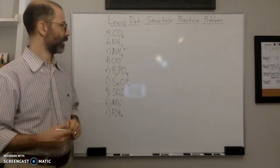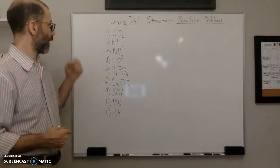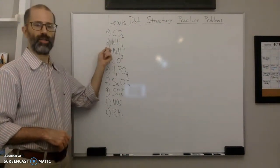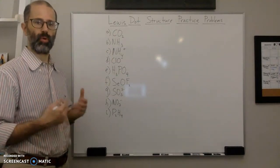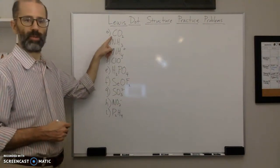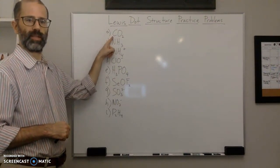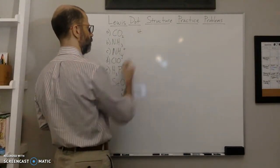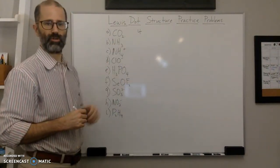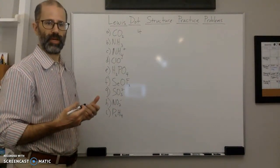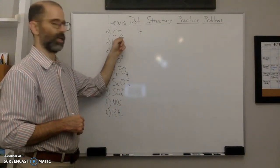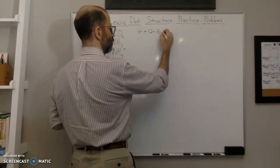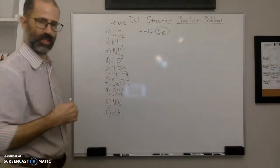I'm going to start with carbon dioxide. The first step is to count the total number of valence electrons. Carbon is in the fourth group, so it has four valence electrons. Oxygen is in group six, so it has six valence electrons, and we have two of them — two times six is twelve. So four plus twelve gives me sixteen total valence electrons.